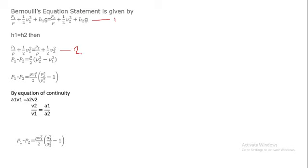Rearranging: P1 minus P2 equals ρ/2 into (V2² minus V1²). That is, 1/2·V2² minus 1/2·V1², taking 1/2 common gives P1 minus P2 equals ρ/2 times (V2² minus V1²).